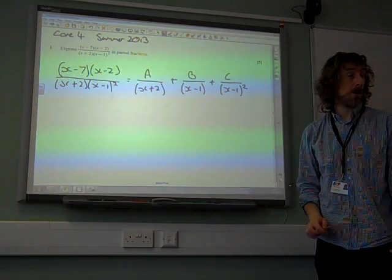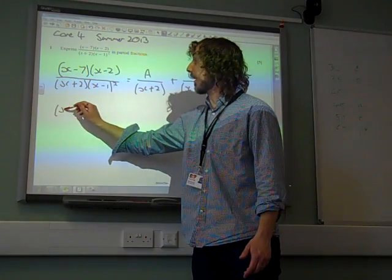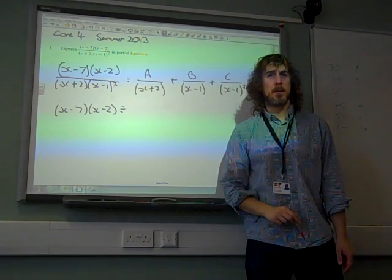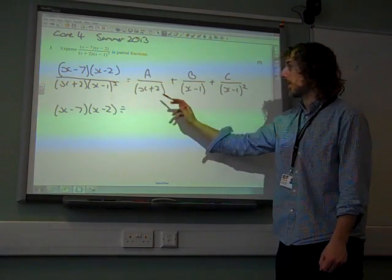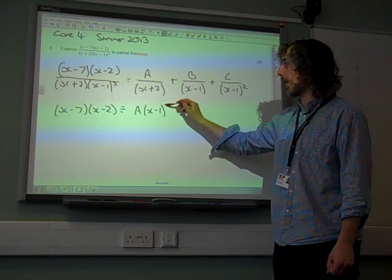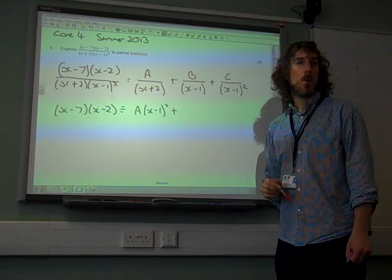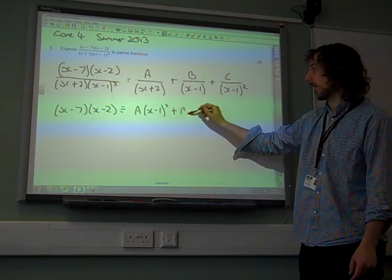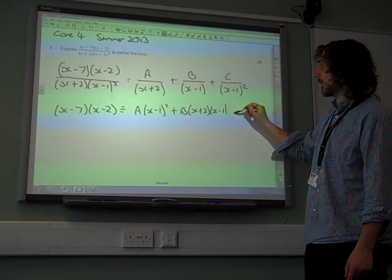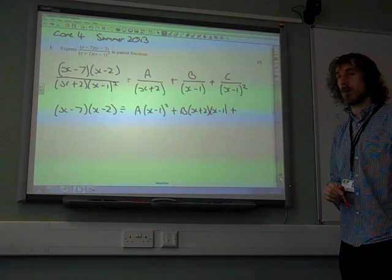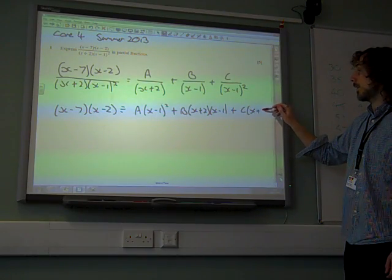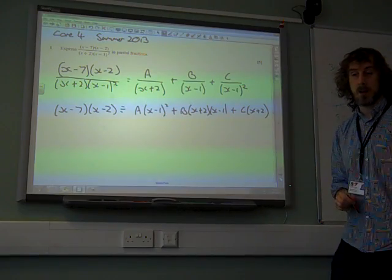And then we'd multiply everything by the denominator to get it to say, x minus 7 times x minus 2. And multiplying carefully through, the x plus 2 would cancel to leave us with a times x minus 1 squared. One of the x minus 1 would cancel to leave us with b, x plus 2, x minus 1. And finally, the x minus 1 squared would cancel to leave us with c, x plus 2.